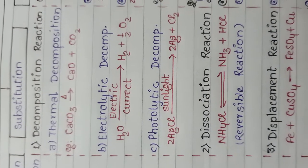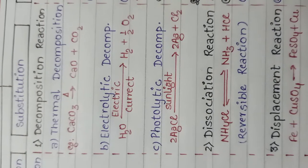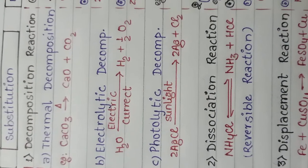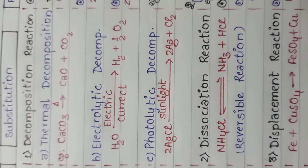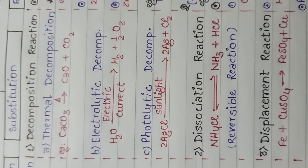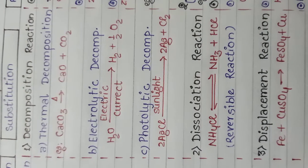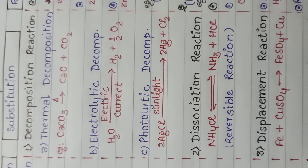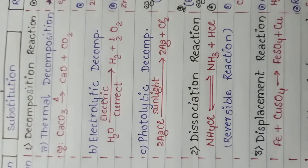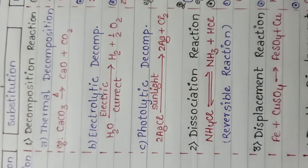There are three types of decomposition reaction: first is thermal decomposition reaction, second is electrolytic decomposition reaction, and third is photolytic decomposition reaction.